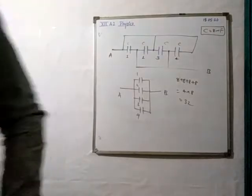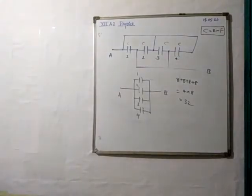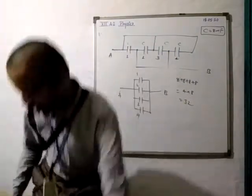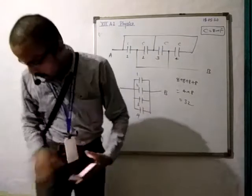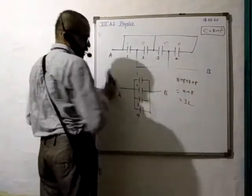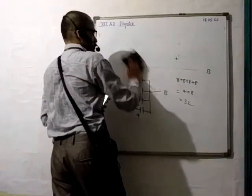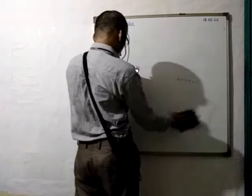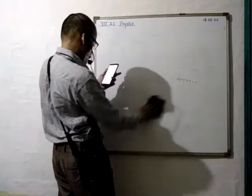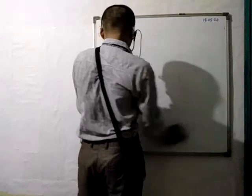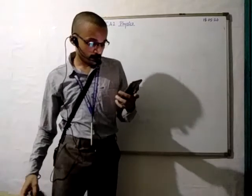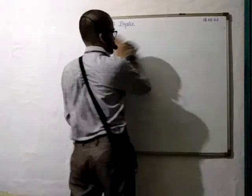We will do one more problem, and after that we will make the second video. In this problem — the capacities and connections of 5 capacitors are shown in the figure. The potential difference between A and B is 60 V. Find the equivalent capacitance between A and B, and the charge on the 5 microfarad capacitor.